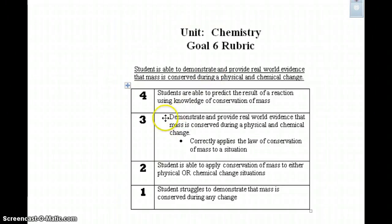For this goal, students need to be able to demonstrate and provide real world evidence that mass is conserved during a physical and chemical change. You talked about chemical and physical change in the last goal, and we are reviewing it in this goal and adding some things on.